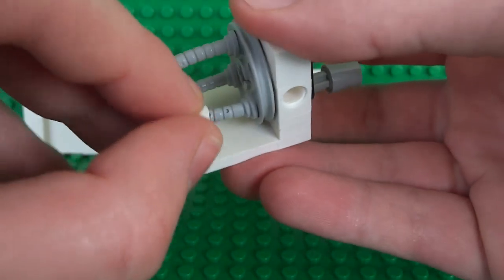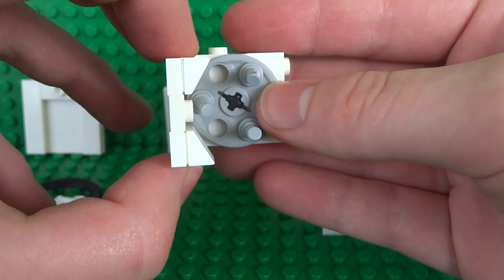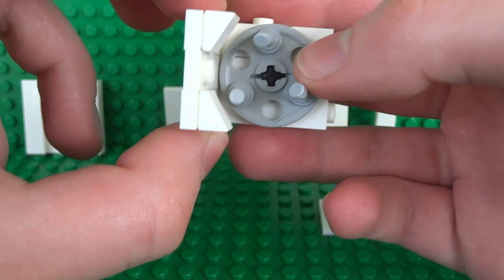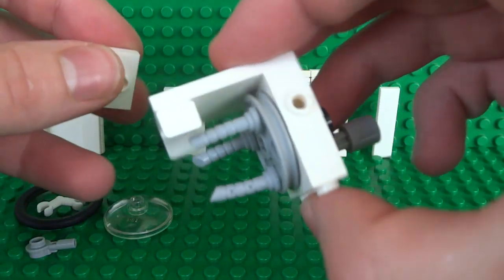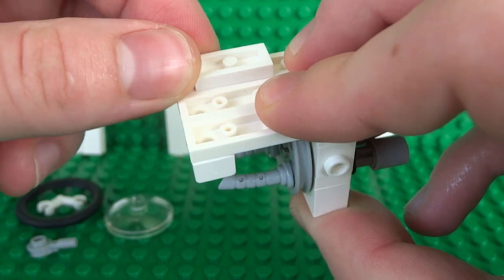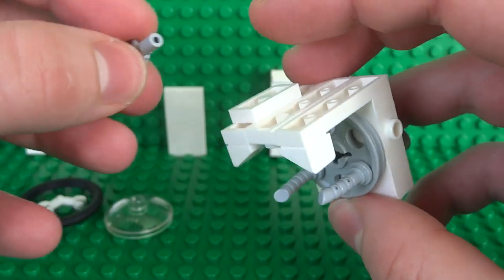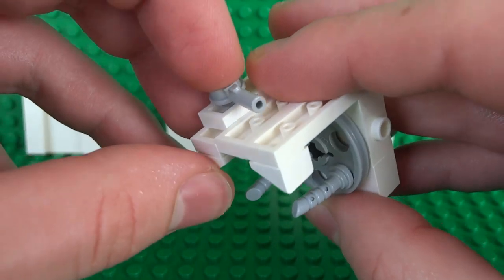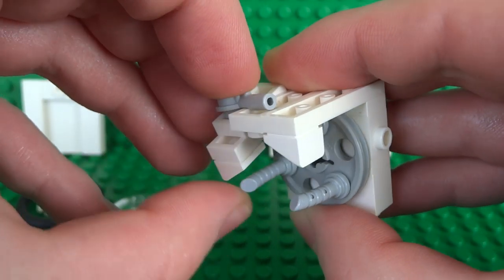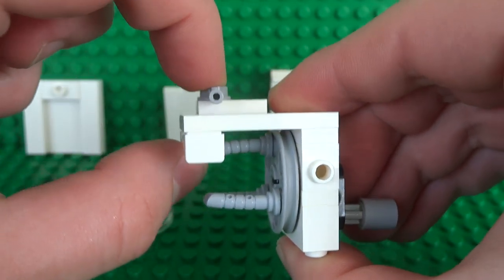With two 1x1 sloped pieces to create a more rounded appearance for the front. Then on this bit here you can attach another 1x2 jumper plate just with a half stud offset on that side. Then a 1x1 round plate with the bar over on this side. So that should face directly upwards.